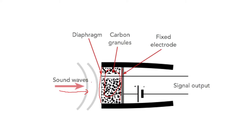When the sound hits or is incident on the diaphragm, it will move in and out, and hence the movement of carbon granules will be either pressed or unpressed. In that case, the resistance of carbon granules will vary. That resistance we use with an external DC bias to produce a flow of current. As the resistance of the carbon granules varies, the current will also vary, and that variation in current will be the representation of sound.